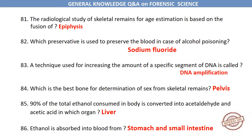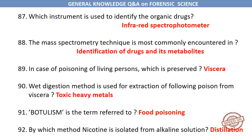A technique used for increasing the amount of a specific segment of DNA is called DNA amplification. Which is the best bone for determination of sex from skeletal remains? Pelvis. 90% of the total ethanol consumed in the body is converted into acetaldehyde and acetic acid in the liver. Ethanol is absorbed into blood from the stomach and small intestine. Which instrument is used to identify organic drugs? Infrared spectrophotometer. The mass spectrometry technique is most commonly encountered in the identification of drugs and their metabolites. In case of poisoning of living persons, viscera is preserved.